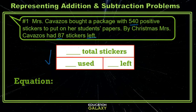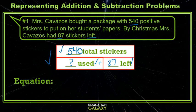Let's start with the strip diagram. Mrs. Cavazos bought a package with a total of 540 stickers — we always want the total to go on top. The stickers she's used plus the stickers that are left should equal the total. We don't know how many she's used, but we do know she has 87 stickers left. If you understand the strip diagram, the equation is very easy: the used amount (represented by a box) plus the left equals the total.